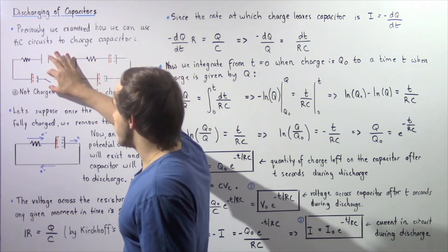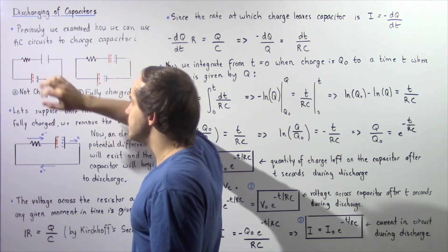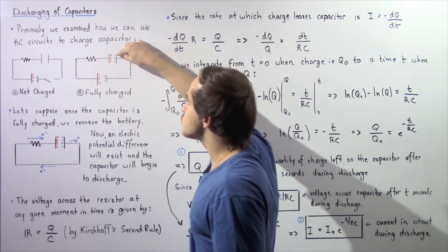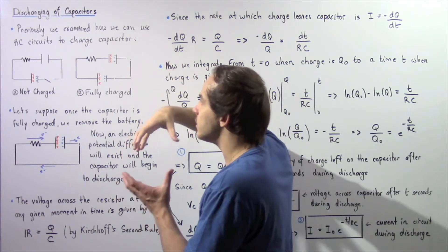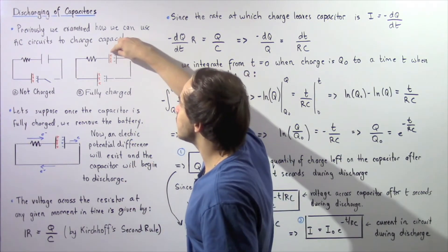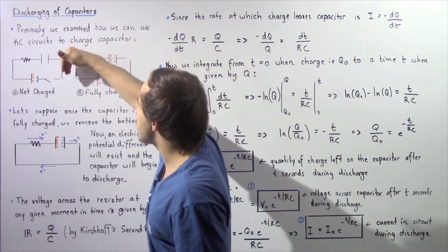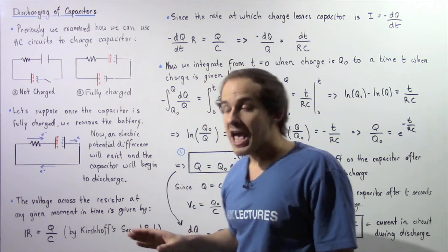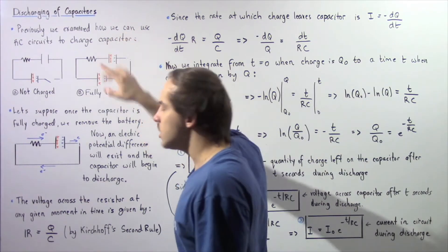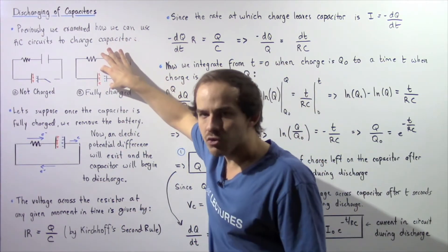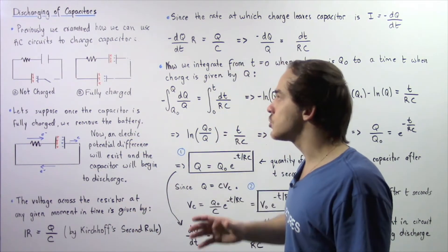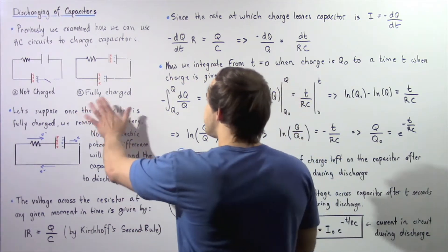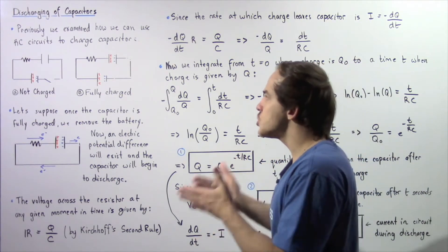Now let's suppose we take this switch and close it. At that moment, electrons will begin to flow from the lower potential side of our battery to this plate of our capacitor. Electrons will begin to collect on this plate, and that collection of negative electric charge will push the electrons on the other plate away, and those electrons will travel into the battery. Eventually, after some time, the capacitor will be fully charged. At that moment, the voltage across our capacitor will equal the voltage across our battery, and electrons will stop flowing — no electric current will exist when the capacitor has the same voltage as the battery. This is how we use RC circuits to charge our capacitors.